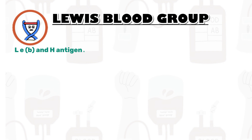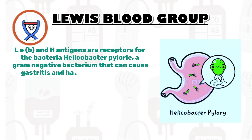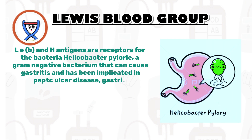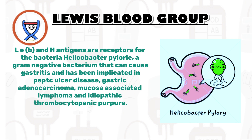Le-b and H antigens are receptors for the bacterium Helicobacter pylori, a gram-negative bacterium that can cause gastritis and has been implicated in peptic ulcer disease, gastric adenocarcinoma, mucosa-associated lymphoma, and idiopathic thrombocytopenic purpura.